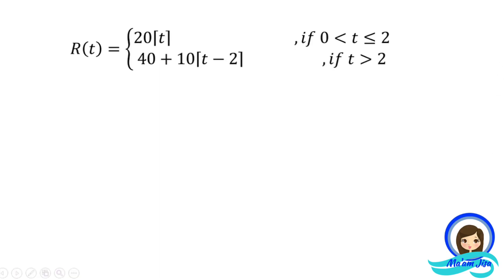For example, if you use 30 minutes, that falls in the first interval (0 < t ≤ 2), so you use the first equation. Since the ceiling function applies, 30 minutes equals one hour, so you pay 20 pesos. What if you use three hours? Three hours falls in the second interval, so we use the second equation.